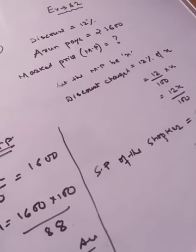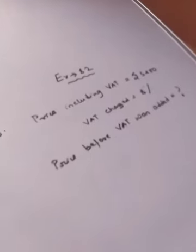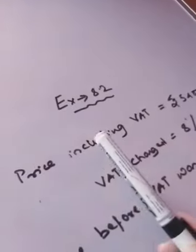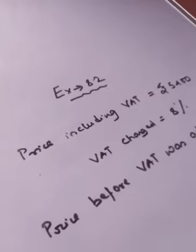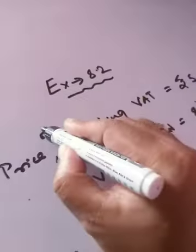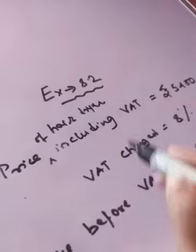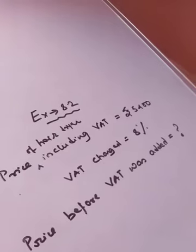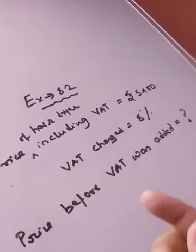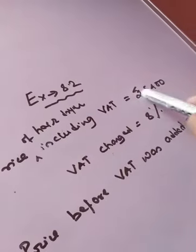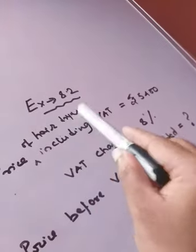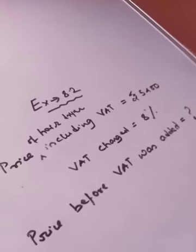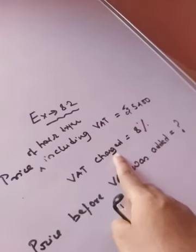Now let's move on to the last sum, that is question number 10. It is quite similar to question number 9. A hair dryer was bought at a price including VAT of 5,400 rupees. Some price was written on the tag of the hair dryer and 8% VAT was charged, making the price 5,400. But this is not the original marked price written on the box, which we have to find out.